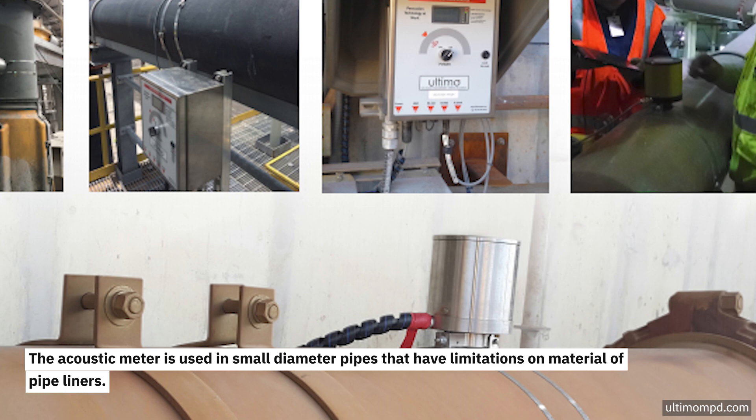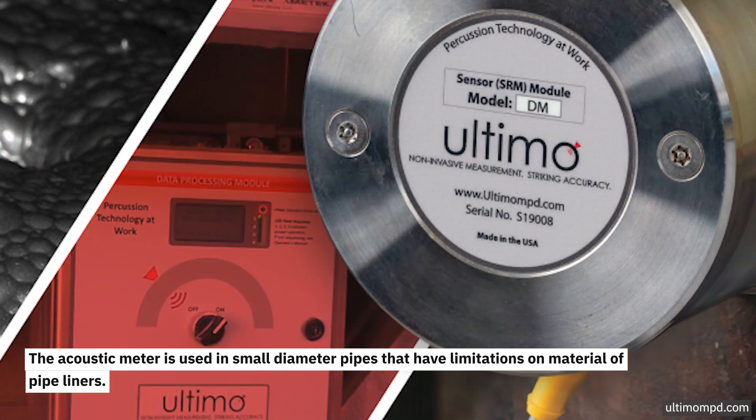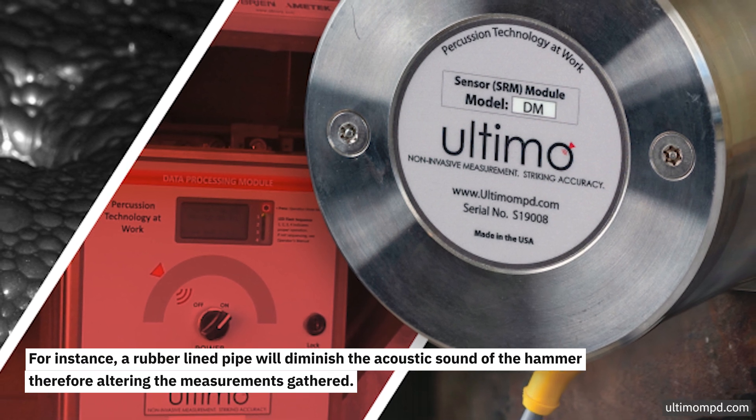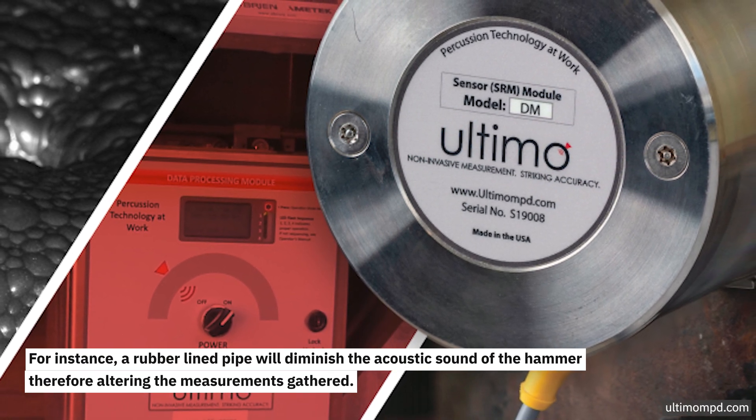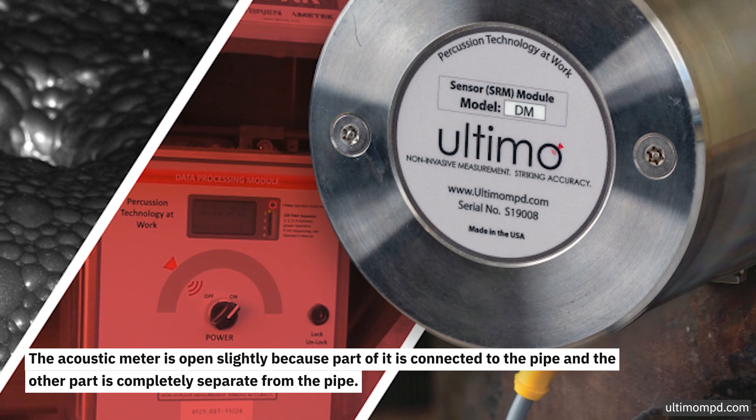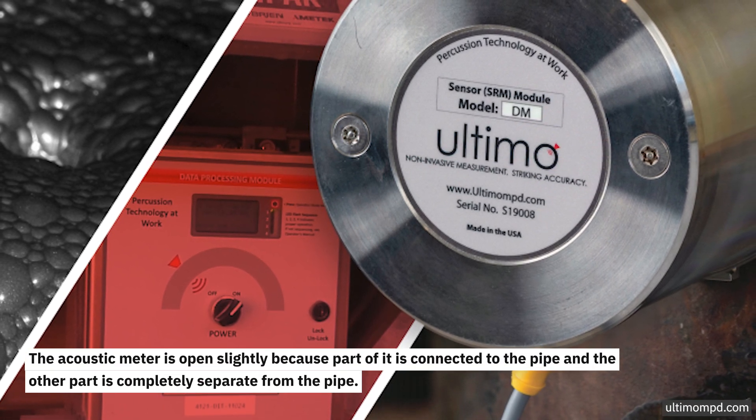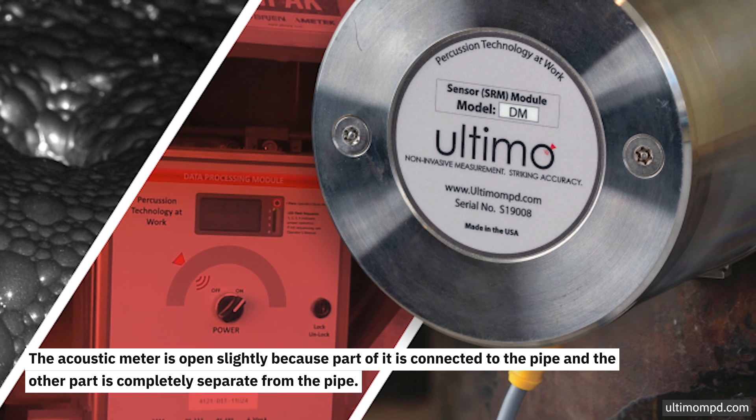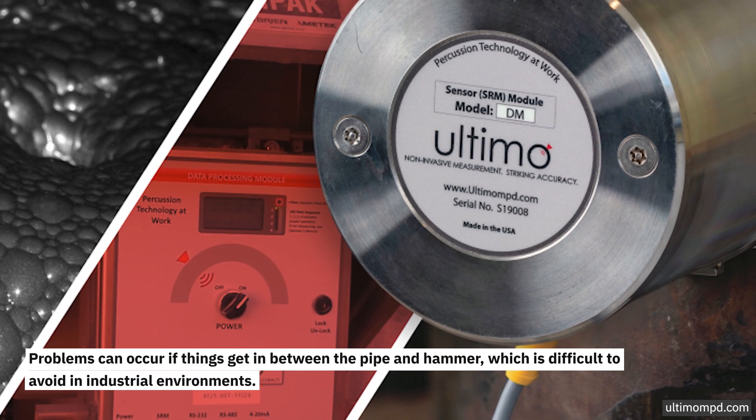The acoustic meter is used in small diameter pipes that have limitations on materials of pipe liners. For instance, a rubber line pipe will diminish the acoustic sound of the hammer, therefore altering the measurements gathered. The acoustic meter is open slightly because part of it is connected to the pipe and the other part is completely separate from the pipe. Problems can occur if material gets in between the pipe and hammer, which is difficult to avoid in industrial environments.